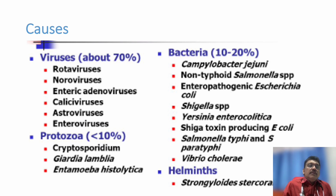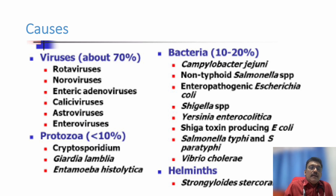Different causes exist for diarrhea. Viral causes, especially in children, include rotavirus, norovirus, enteric adenovirus, calicivirus, astrovirus, and enterovirus. Bacterial causes include Campylobacter jejuni, Salmonella, E. coli, Shigella, Yersinia, shiga toxin-producing E. coli, Salmonella typhi, paratyphi, and Vibrio cholerae. Some protozoa can also produce diarrhea — Entamoeba histolytica and Giardia lamblia are the most common.